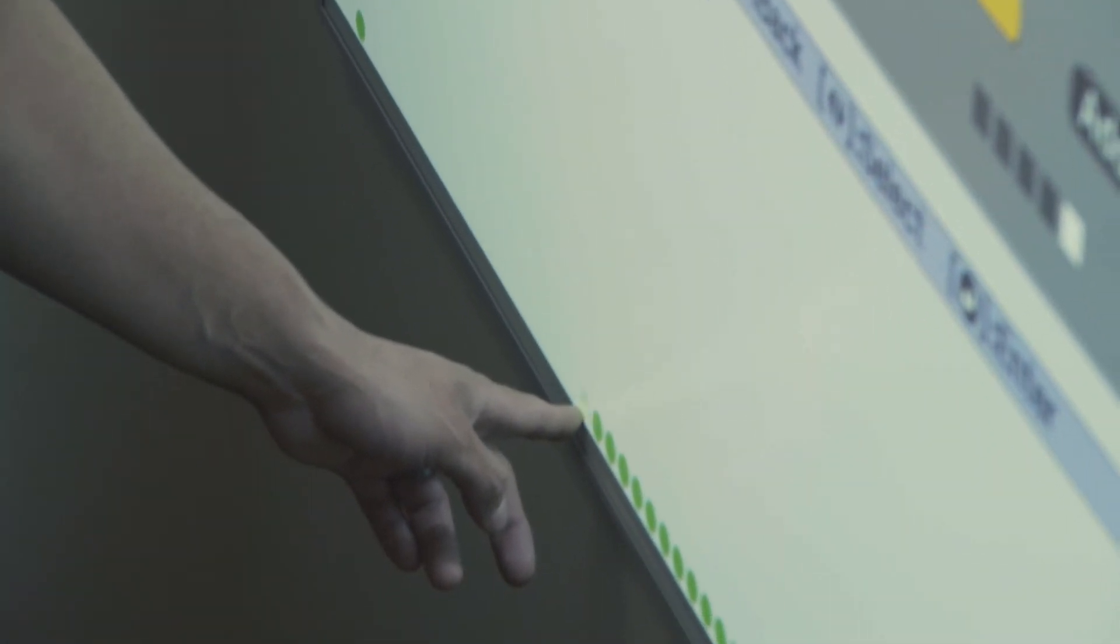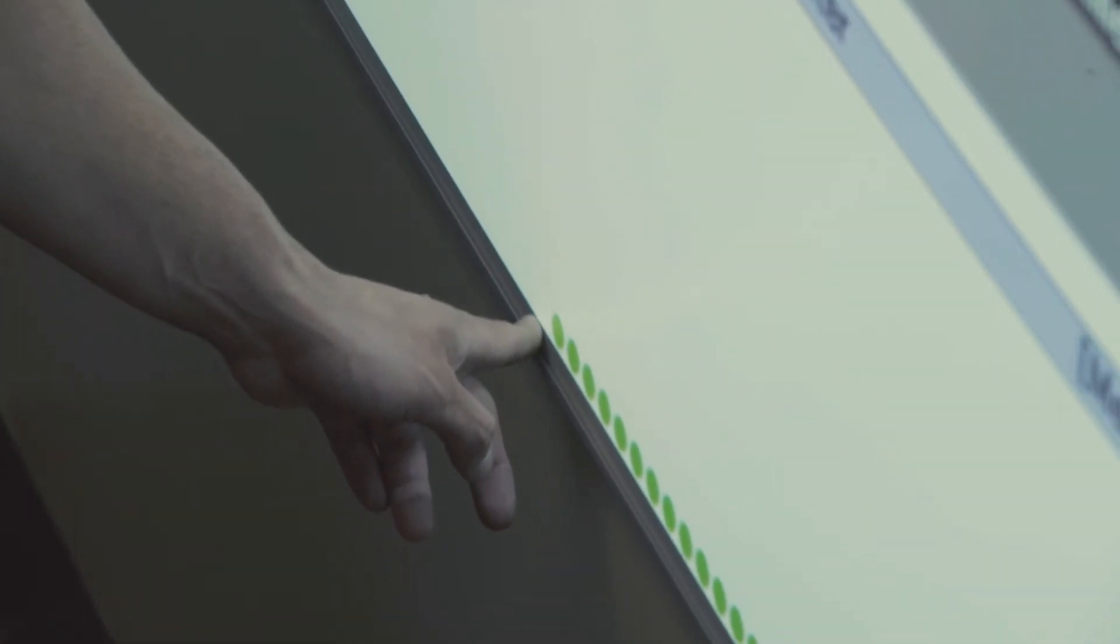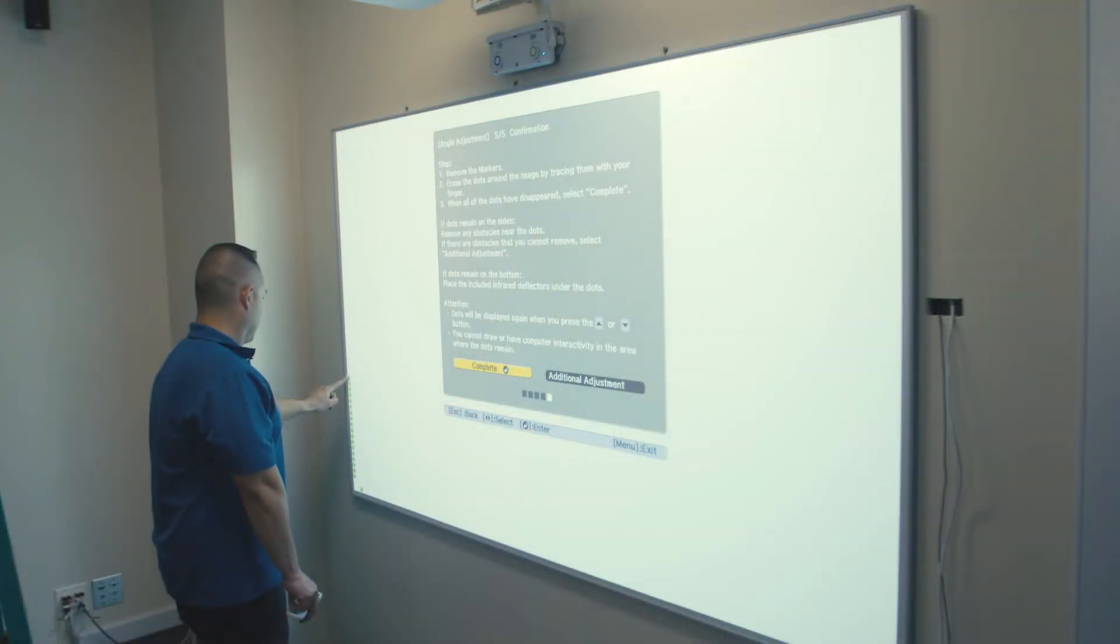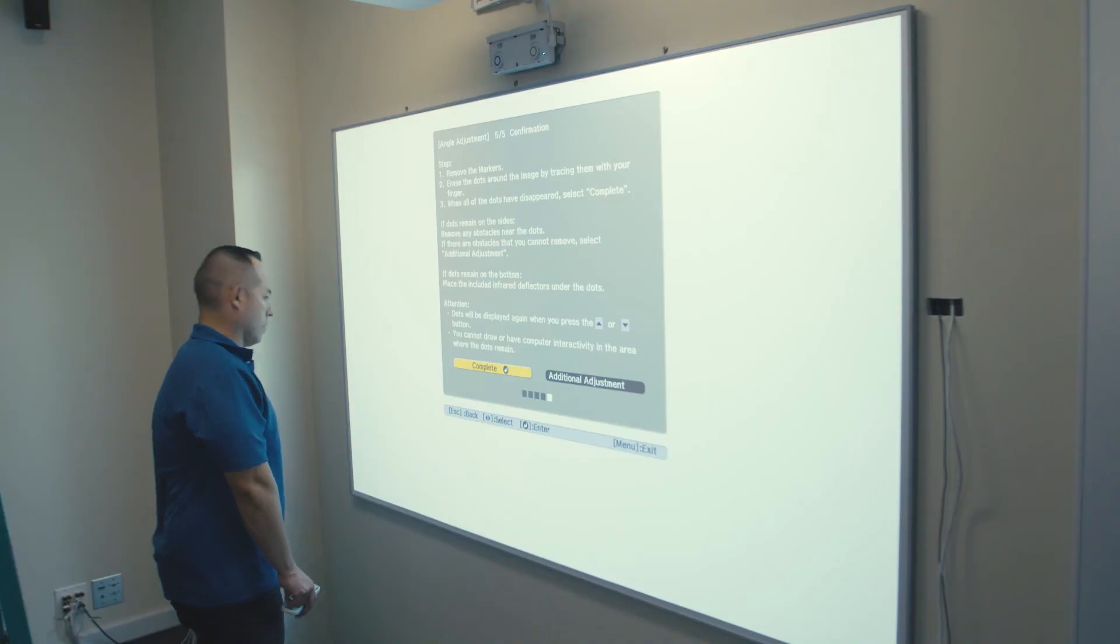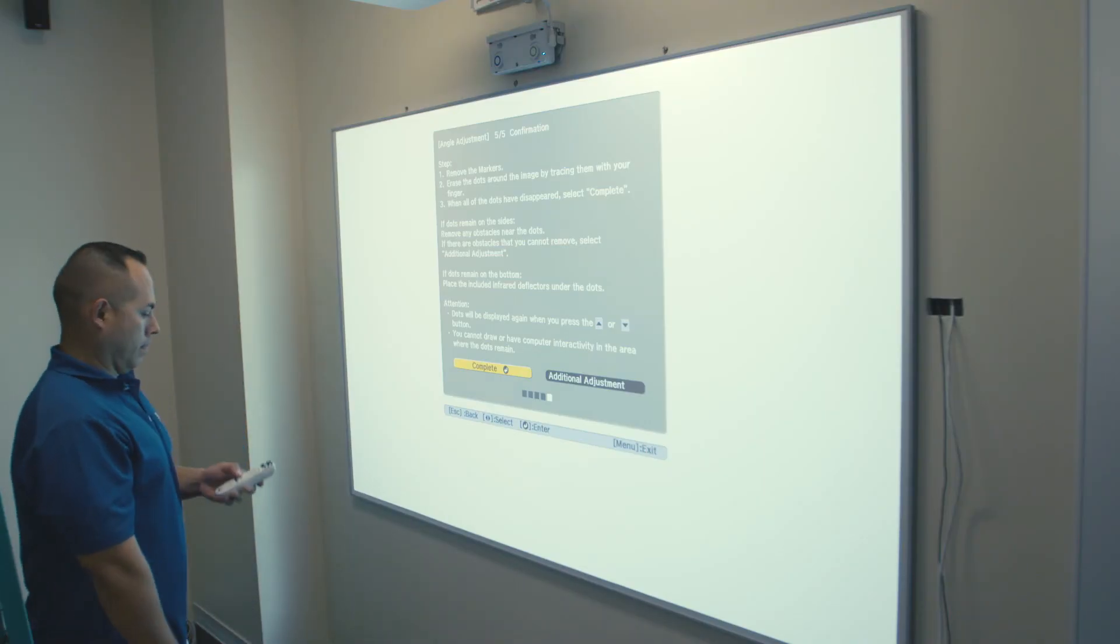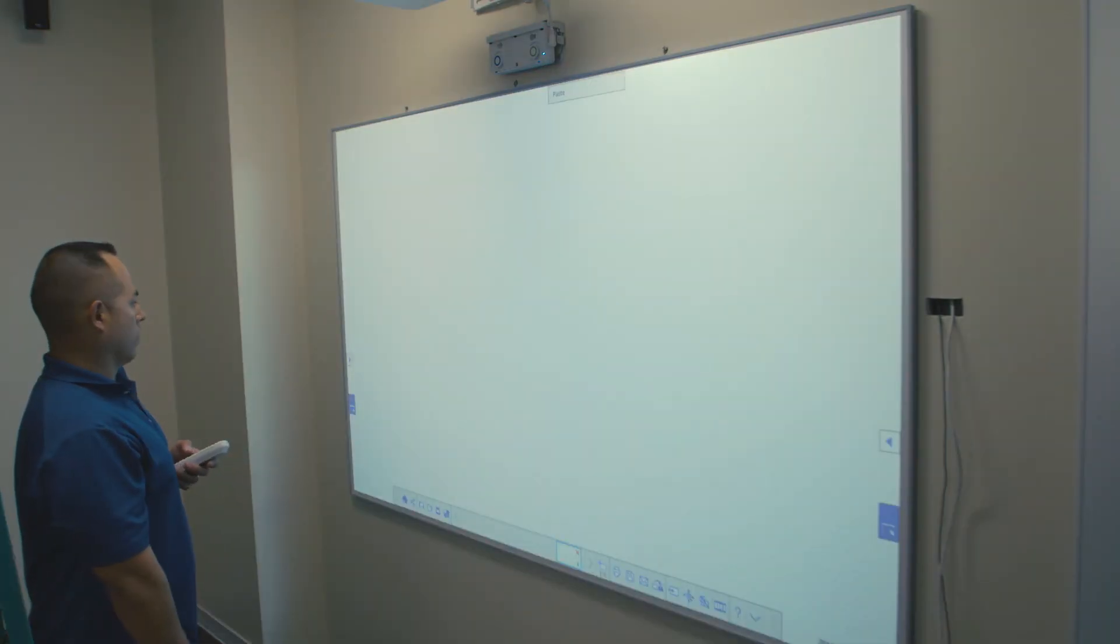In this last step, green dots will appear around the perimeter of the board. Using your finger, trace around the perimeter, touching the green dots until they all disappear. Once completed, press Enter on the remote to end the calibration process.